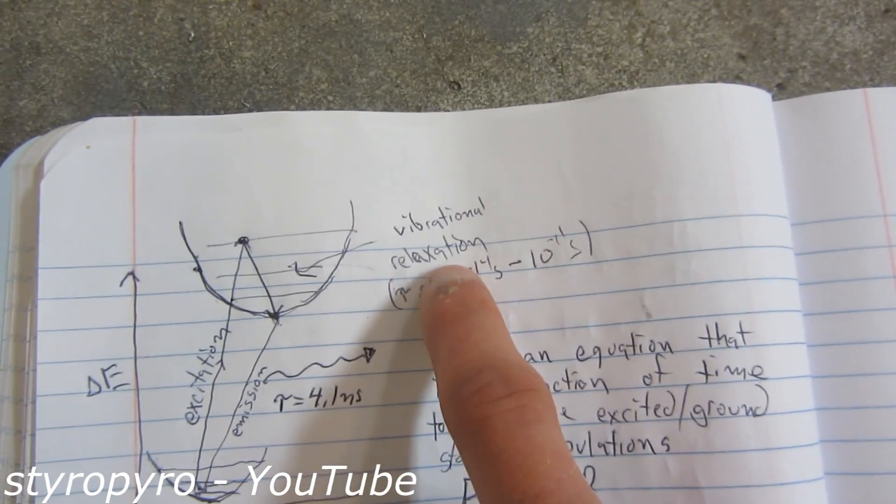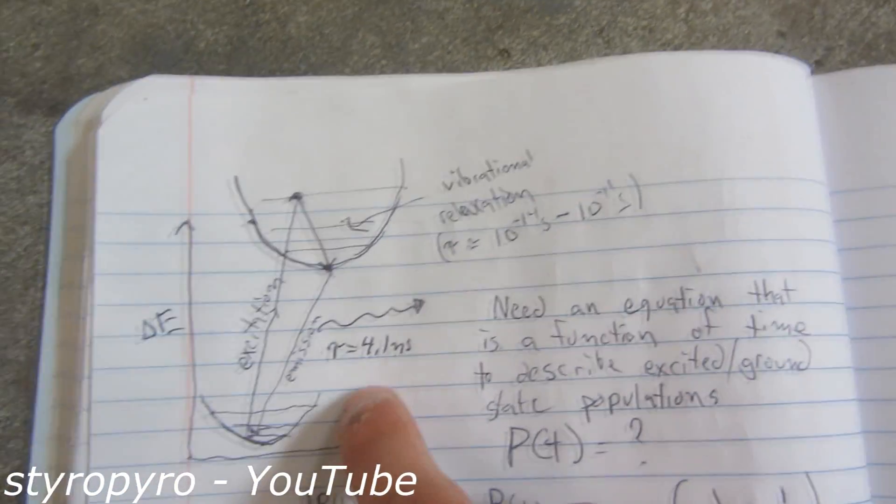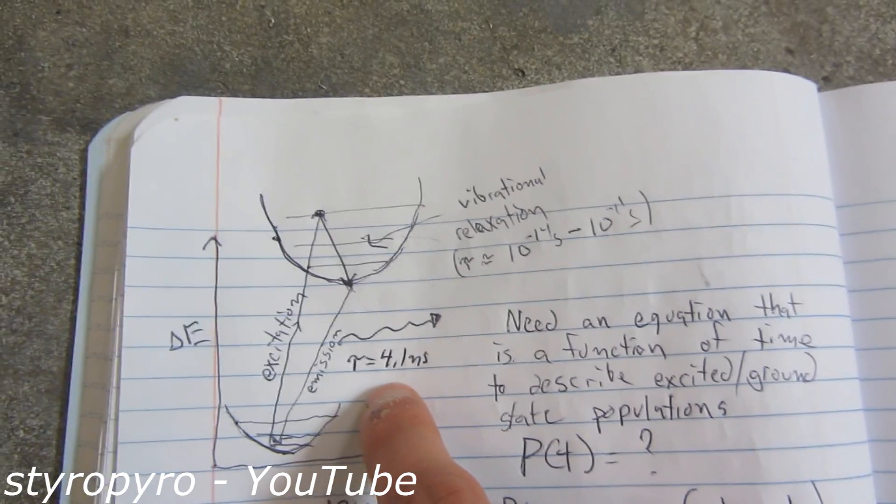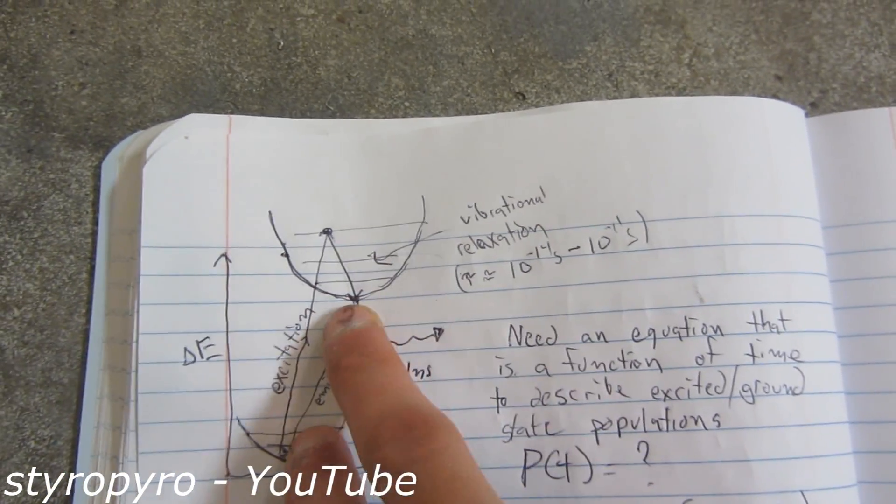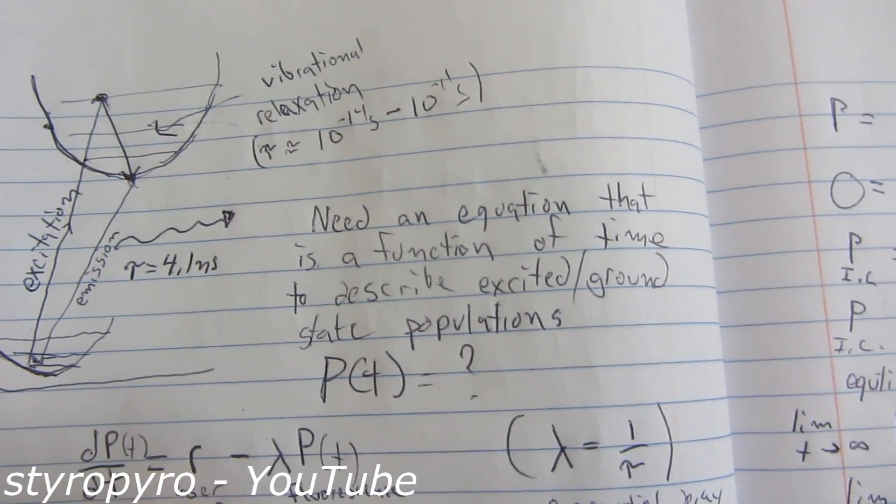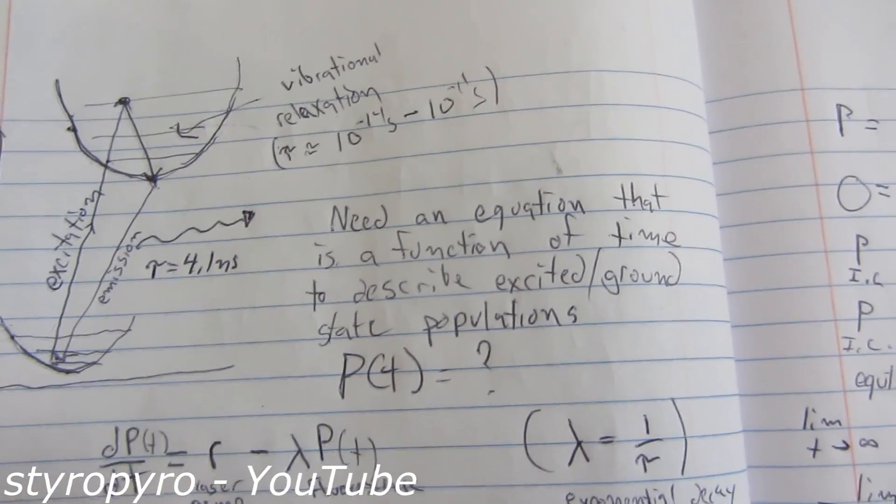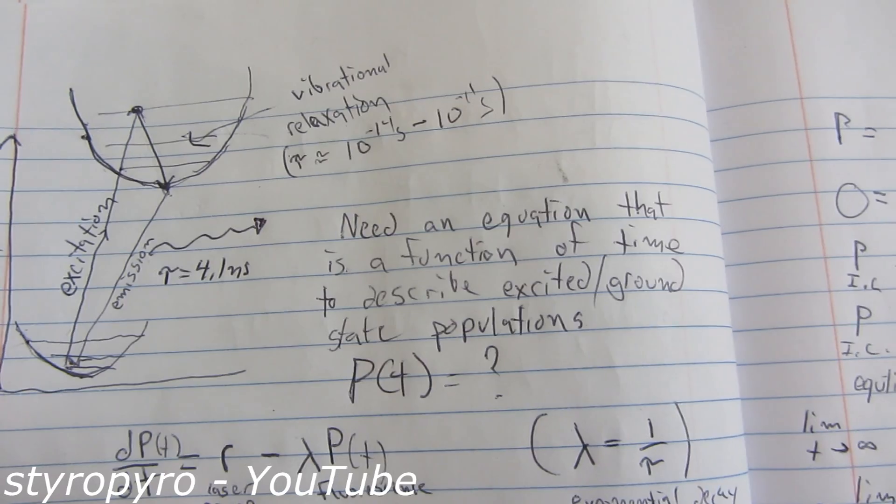But the vibrational relaxation time is much, much shorter than the fluorescence emission time. So for the sake of the math, we can just pretend like this is only two levels here. So now in order to find the saturation point, I need to come up with a function that describes the population of excited molecules.